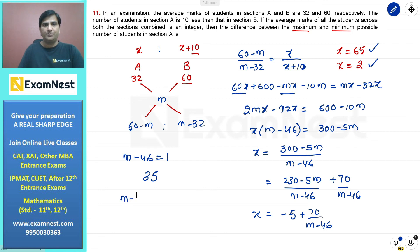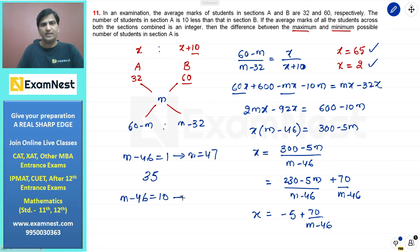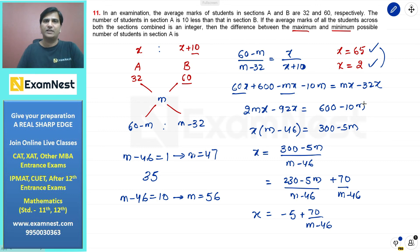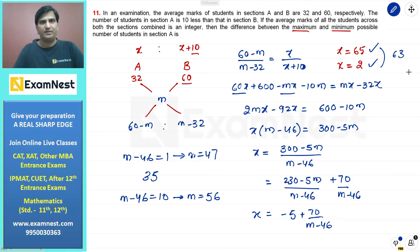x की value 2 तब होगी जब m-46=10, यानि m=56। और m=47 लेने पर x की highest value 65 आती है। दोनों ही cases में highest और lowest values same हैं: 65 और 2। इनका desired difference 63 है।